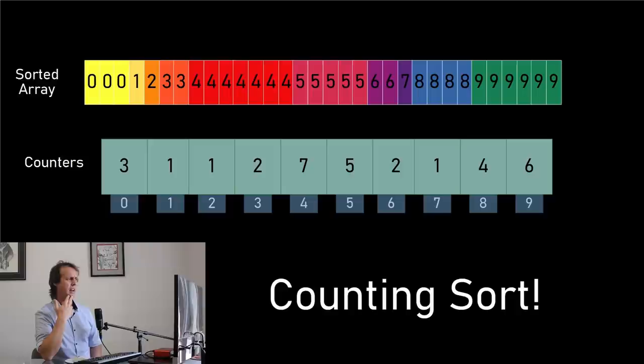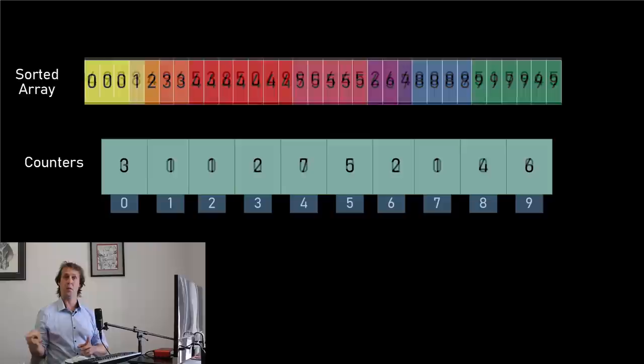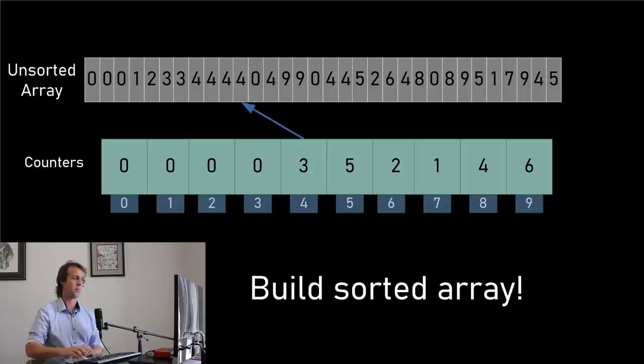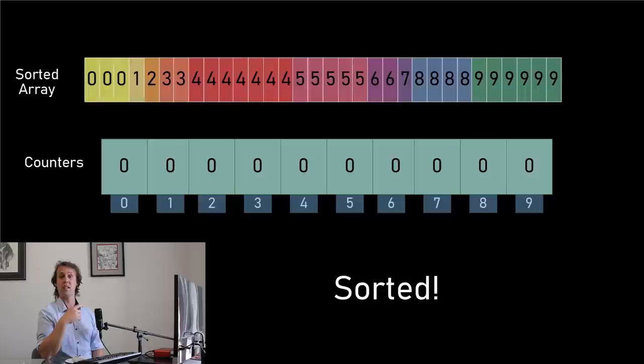When we actually perform a counting sort in code, we usually only traverse the list twice. We run through the list once, incrementing each digit counter as we find them. And then the second time we run through the list, we're writing the sorted list back in place. This means counting sort actually has a running time which is linear to the input size — it's O(N). So counting sort is really, really fast. If you can use counting sort, then do.